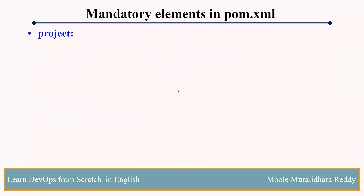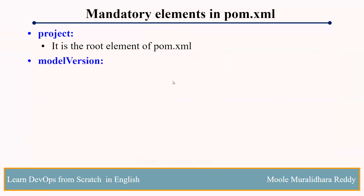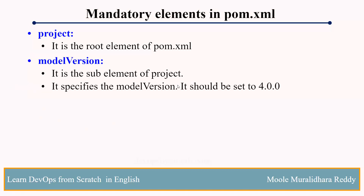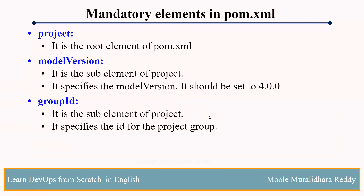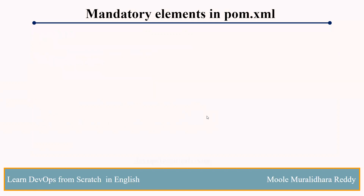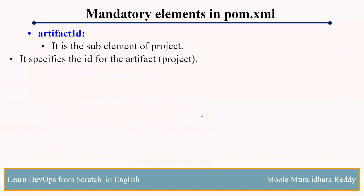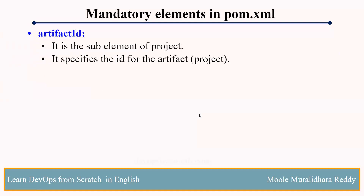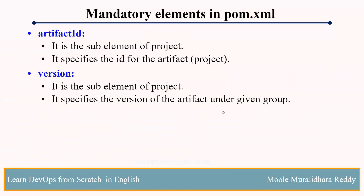Again, let me show you what the mandatory fields are. First, the project tag is the root element of pom.xml. Inside the pom.xml, this is the root element. Inside the project tag, we have modelVersion, which is a sub-element of project and must be 4.0.0. Next is groupId, which is a sub-element of project and represents the project group — for example, com.techvorelwithmurli. Next is artifactId, which is a sub-element of project and is nothing but the project name. And version is also a sub-element of project — it declares whether the project version is a snapshot or a release.